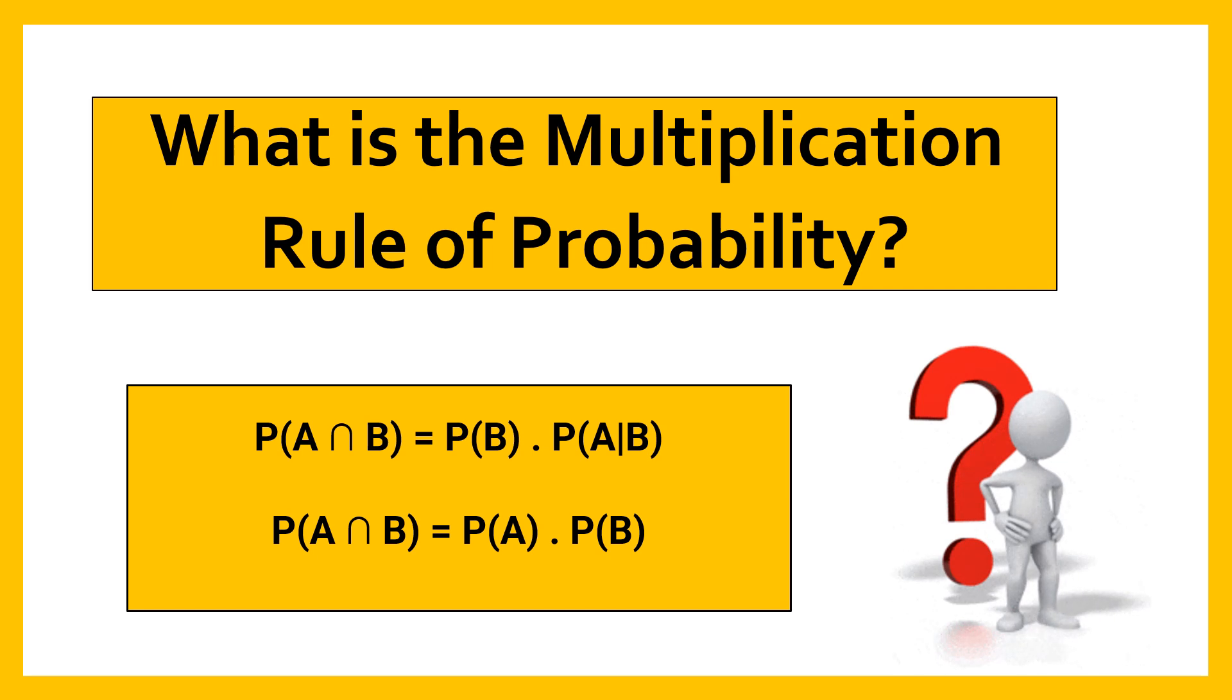If A and B are two independent events in an experiment then the probability of both events occurring simultaneously is given by the second equation.